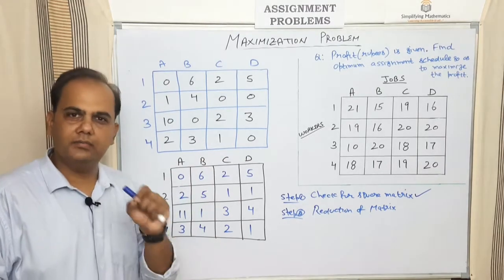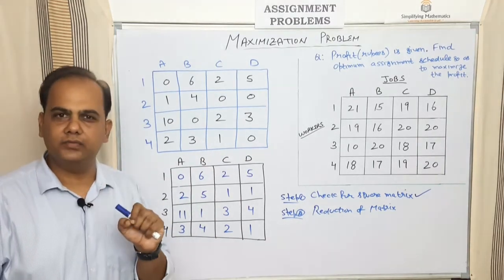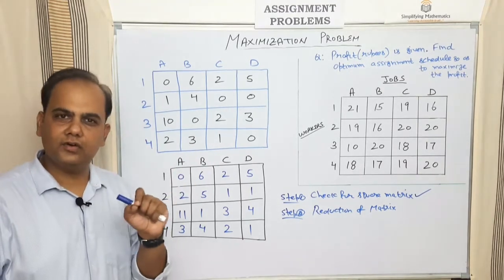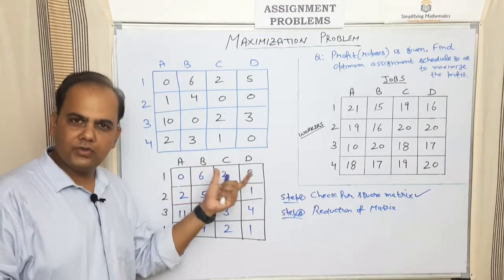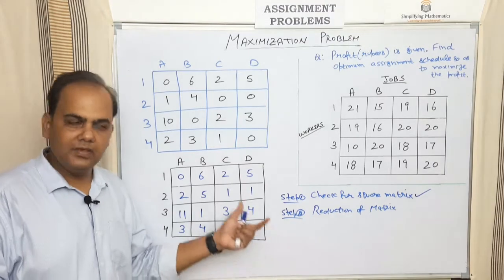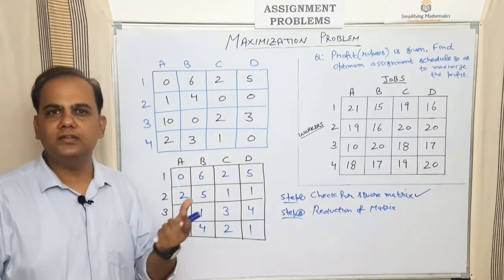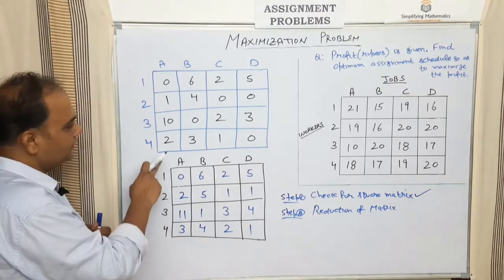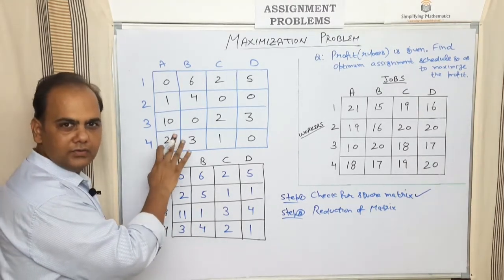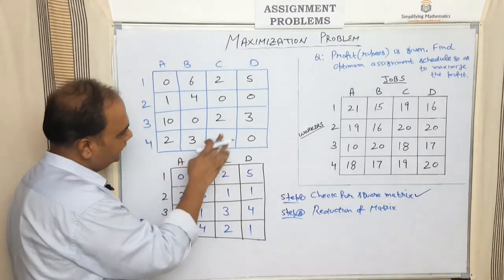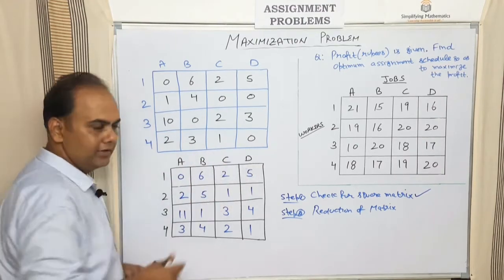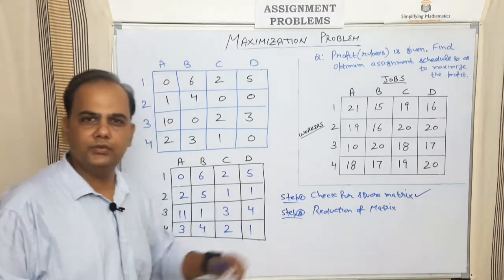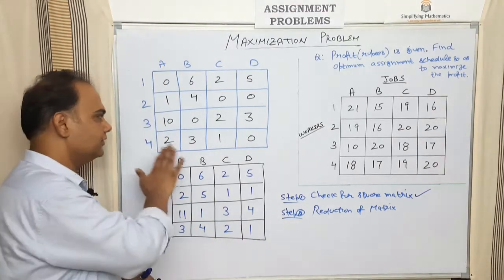By performing the row-wise operation, at least one zero is brought into every row. Now check whether there is at least one zero in each column. If every column already has a zero, move to the next step; otherwise perform the column-wise operation. Looking at the columns: the first column has a single zero, the second column also has a zero, and so does the third. This means the second step — matrix reduction — is complete, with at least one zero in each row and column.